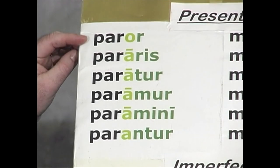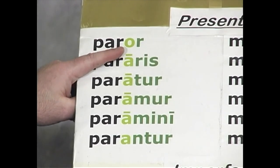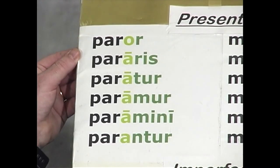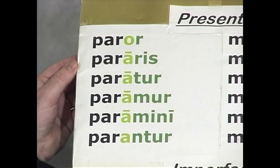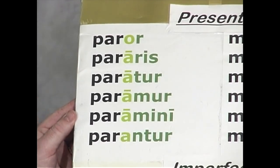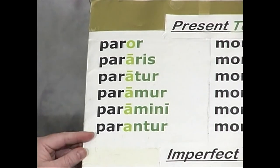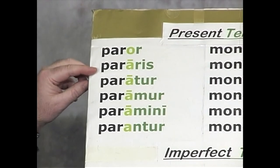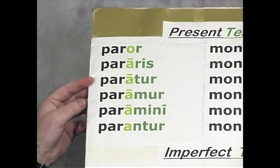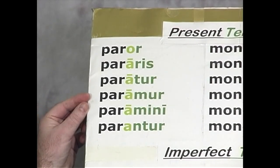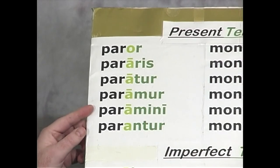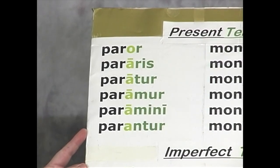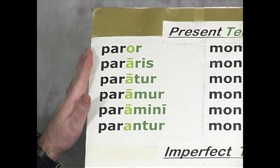The exception is the first person singular, where the -o swallows up the -a from the stem. So: paror, pararis, paratur, paramur, paramini, parantur. This translates: I am being prepared (or I am prepared), you are being prepared, he is being prepared, we are being prepared, you plural are being prepared, they are being prepared. That is the present passive indicative.